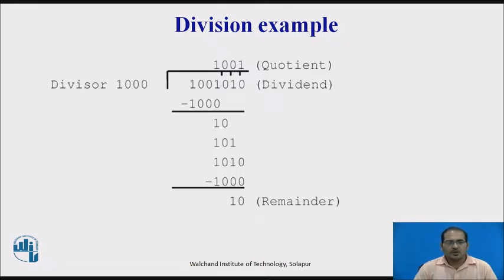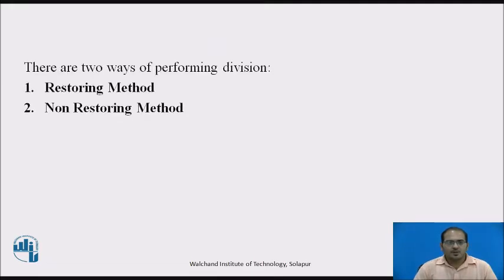The dividend is 1001010 and the divisor is 1300 — this is the normal way of computing the division. There are two ways of performing binary division: one is the restoring method and another is the non-restoring method. In this session, I am going to explain the division operation using the restoring method.